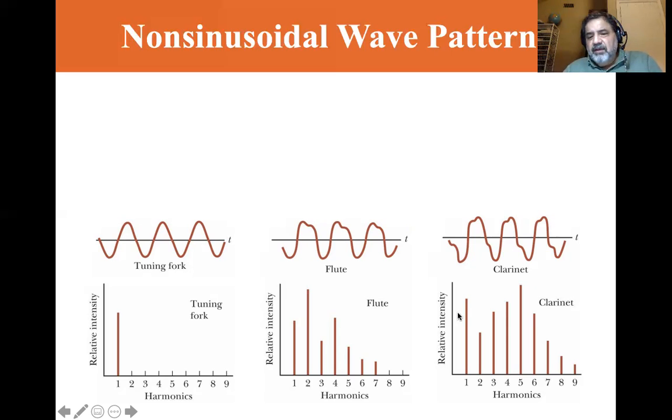If you look at the clarinet, you have a pretty large fundamental. And then you have with each subsequent harmonic up to the fifth, you get its growing pattern, and then it declines from there. So you have these combinations of overtones that make up the signature sound of the instrument.